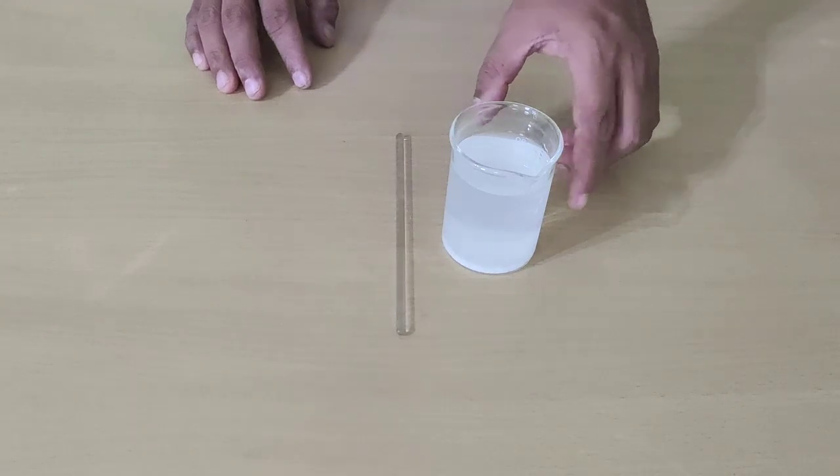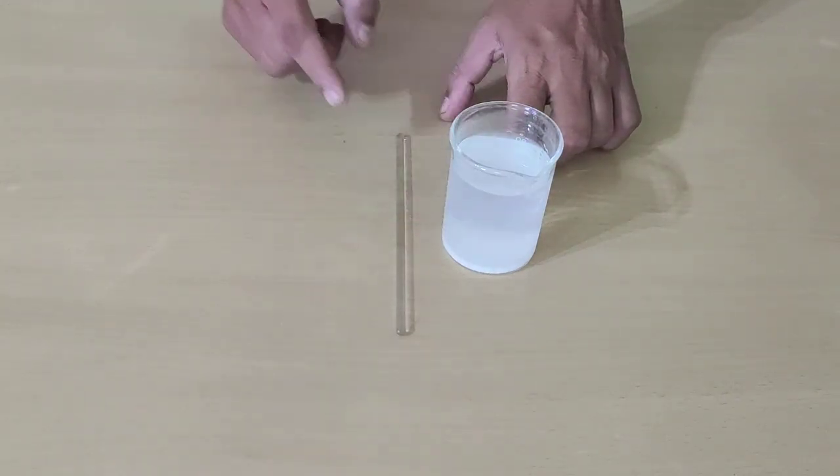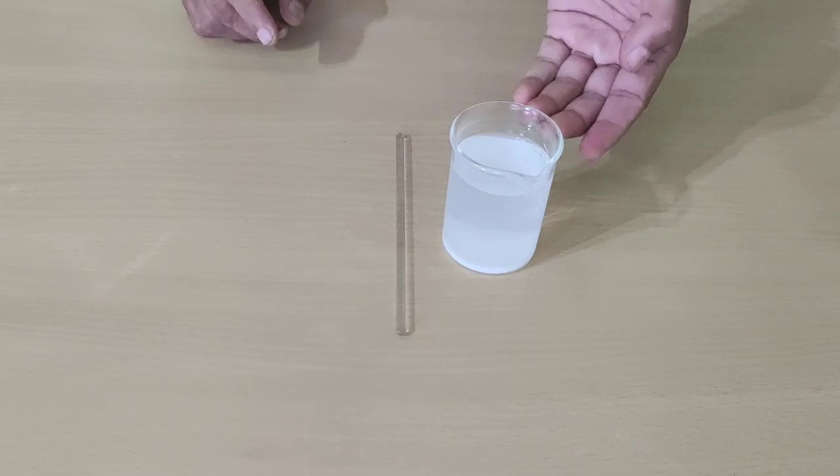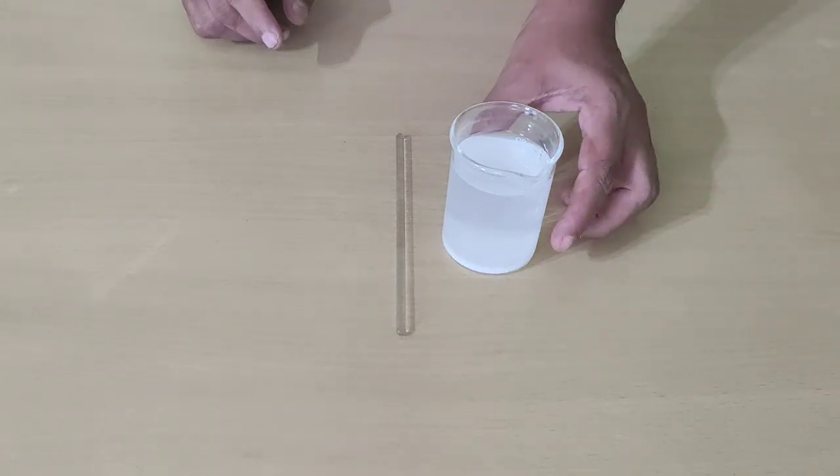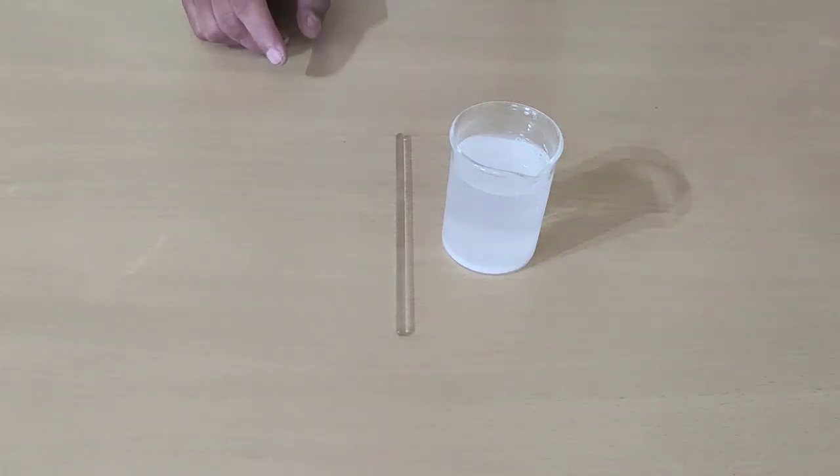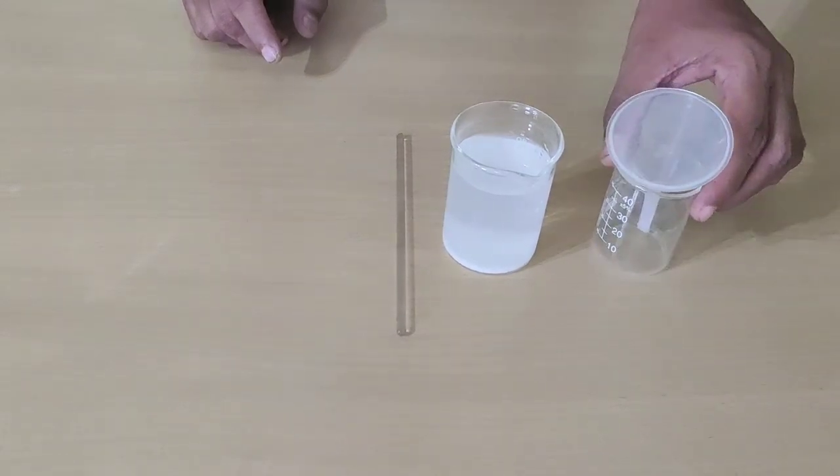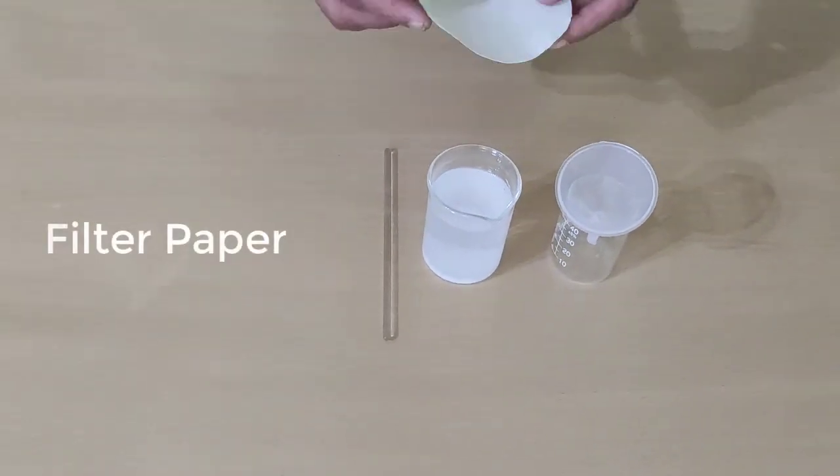Now we see the sediments of calcium hydroxide have settled down to the bottom of the beaker and the upper portion is still looking milky. So we will filter it in another beaker using a filter paper.